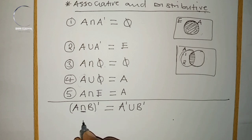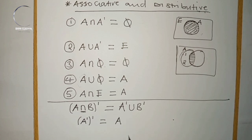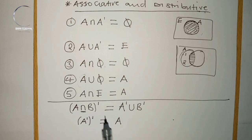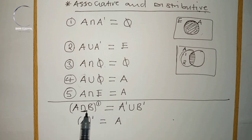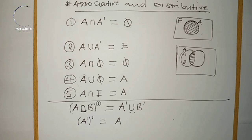Also, multiplying two complements cancels them out — they disappear. Associative property means multiplying the set outside the brackets by everything inside the brackets, distributing over each term.